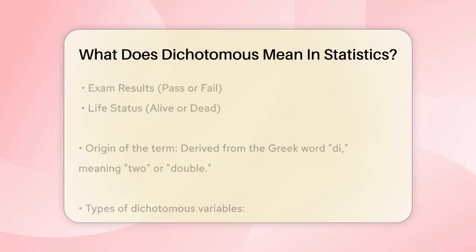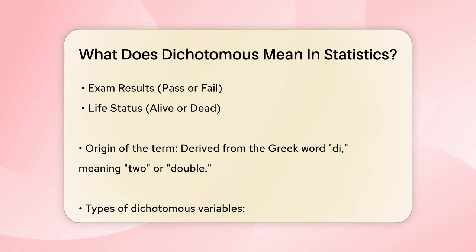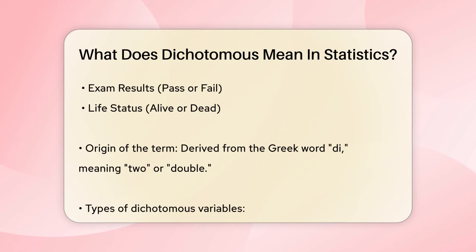How dichotomous variables work: dichotomous variables can be further categorized into discrete and continuous types, although this distinction can be a bit nuanced. A discrete dichotomous variable is clear-cut, like dead or alive — you can't be both at the same time. A continuous dichotomous variable might seem confusing, but it's more about how we interpret the categories. For example, passing or failing an exam can be seen as continuous because grades can range from 0 to 100%, and there are many possible scores in between.